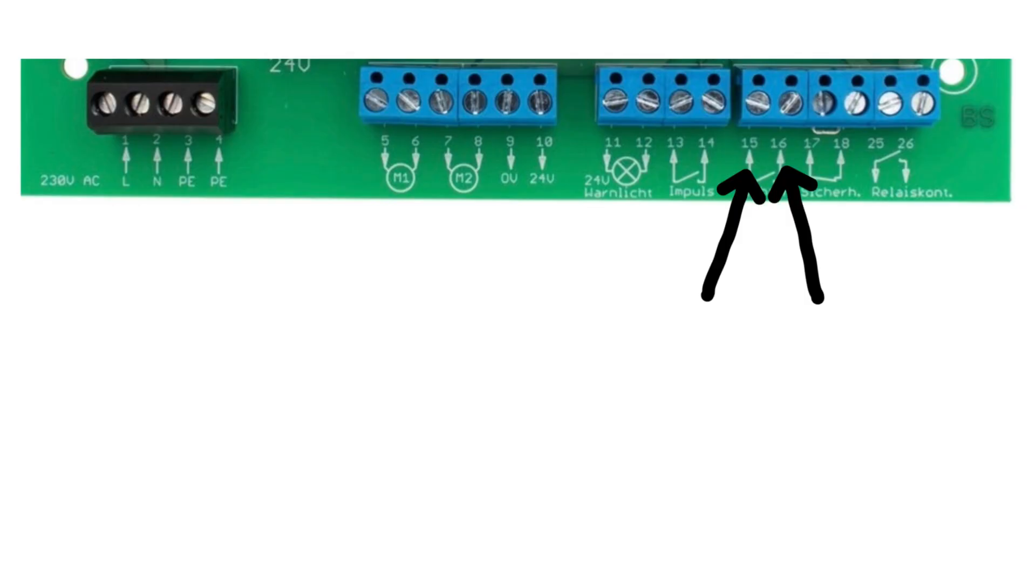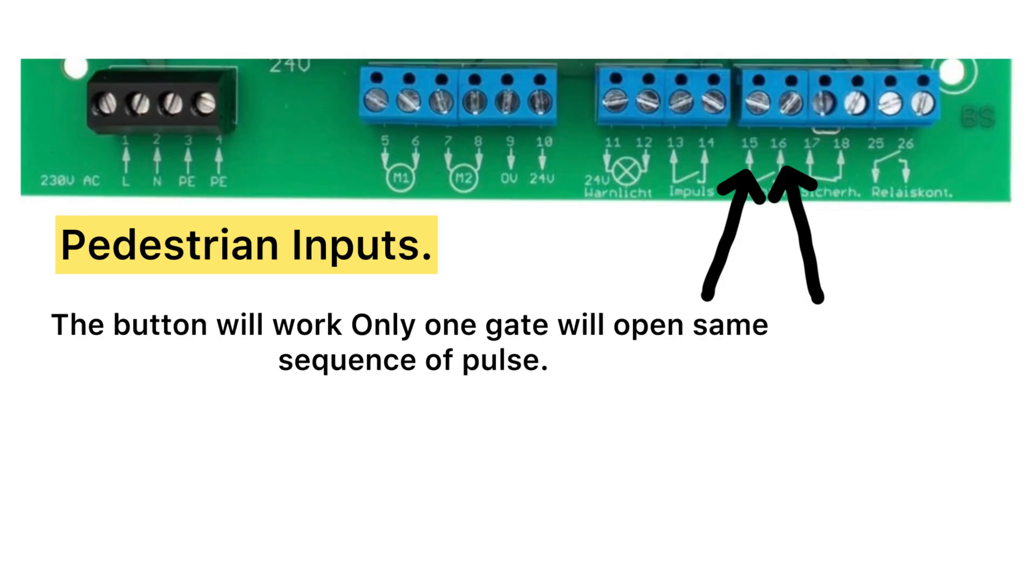Terminal 15 and terminal 16. Pedestrian inputs. The button will work, only one gate will open. Same sequence of pulse: open, stop, and closed. Motor 2 will work only.